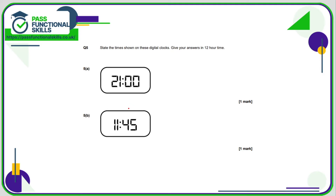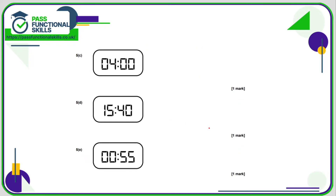Question 5: times in 24-hour clock to convert to 12-hour. If hours are 13 or more, subtract 12. 21:00 — subtract 12 from 21 gives 9, and because we subtracted 12 it's 9 pm. 11:45 is less than 13, so it's 11:45 am. 04:00 is less than 13, so that's 4 am. 15:00 — 15 minus 12 is 3 pm. 00:55 — midnight is 00:00, so this is 12:55 am; the day starts at 12 am.